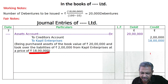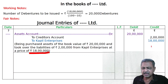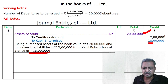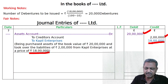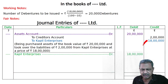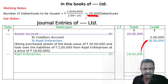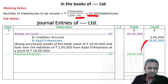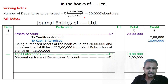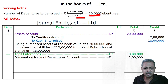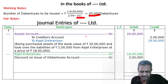As per the question, asset minus liabilities equals purchase consideration — 18 lakhs. So Copil Enterprises account debited 18 lakhs — jo credit tha, cancel ho gaya. Discount mein issue kar raha hai — 20,000 into Rs. 10 discount equals 2 lakhs. Discount on issue of debentures account debit — 2 lakhs.